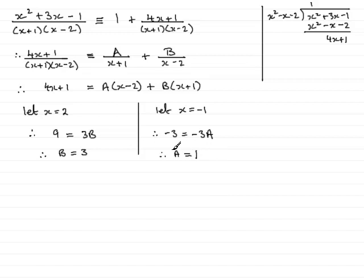So I have my constants a and b, and so all I need to do is substitute them into here, and that will give me the fraction expressed in partial fractions. But I can go straight to the question, and just simply say that x squared plus 3x minus 1 over x plus 1 times x minus 2,